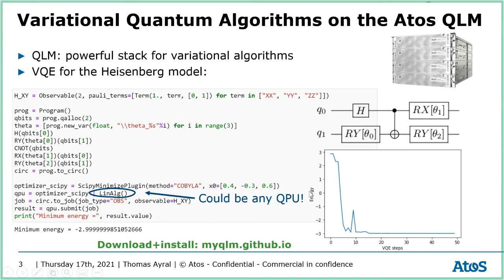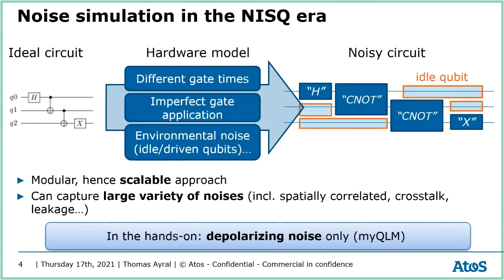Now comes noisy simulation. In the previous slide, the QPU was performing perfect Hadamard gates and perfect CNOT gates. However, today we are in the so-called NISQ era, the noisy intermediate scale quantum era, where quantum processors are noisy — they don't have perfect initialization, perfect gates, or perfect readout. In order to model these errors, one writes so-called noise models and then needs to simulate those noise models. This is what is possible to do on QLM.